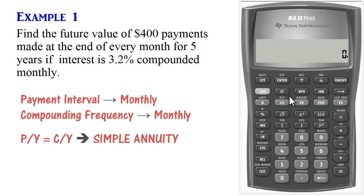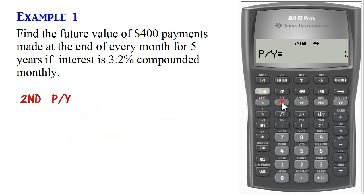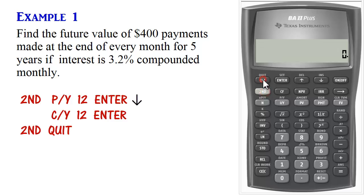We start by pressing 2nd, P/Y. P/Y basically stands for Payments Per Year. Since payments are made every month, there will be 12 payments per year. So we enter 12, enter. Scroll down. It is also compounded monthly, so we enter 12, enter. And then we can quit that mode.